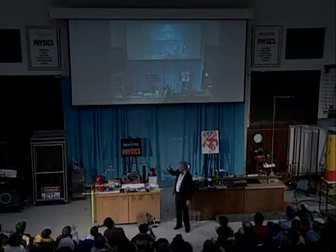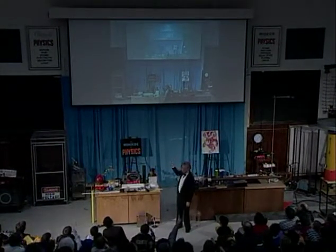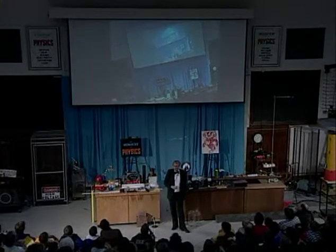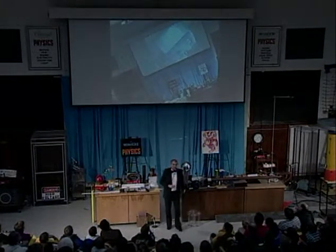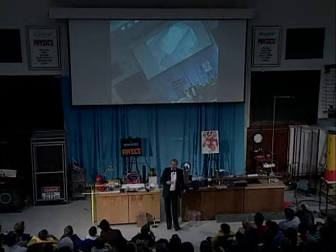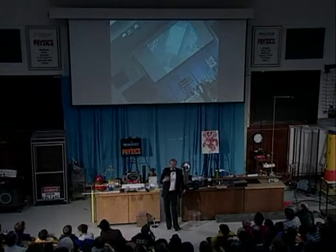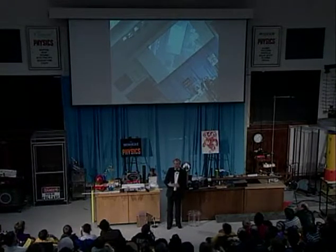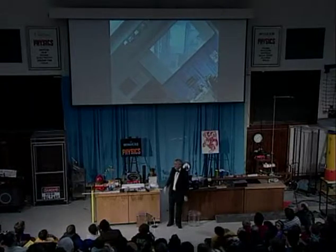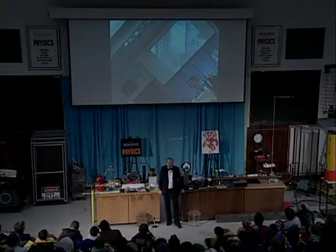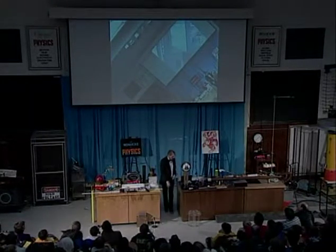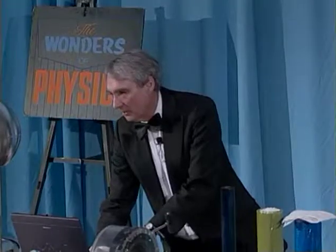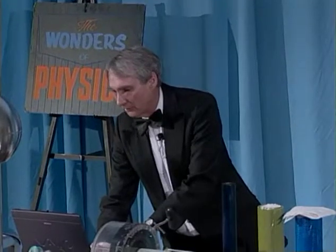So you can see on the screen there's a picture of a screen, and on that screen is a picture of a screen, and so forth and so on. This is something called a fractal — it's a geometric object that is self-similar. It contains many images of itself on ever smaller scales. And I want to show you some other examples of fractals.